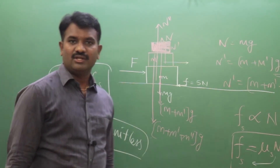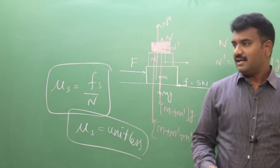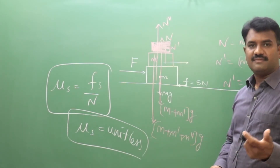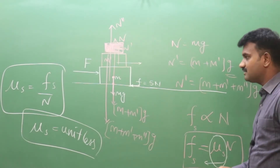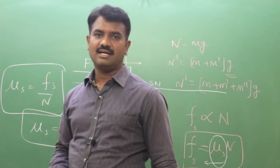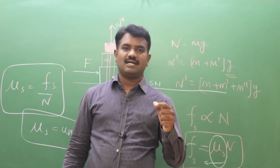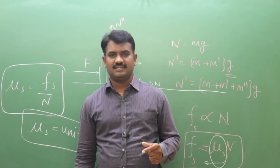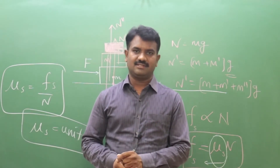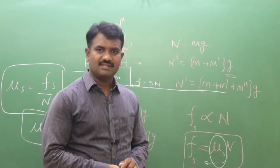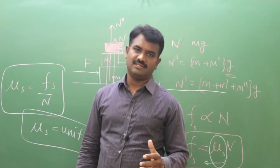If the normal reaction is doubled, the coefficient of static friction mu-s does not change. Mu-s is taken as a proportionality constant — even if the normal reaction is doubled, halved, or multiplied by 100, the coefficient of friction remains the same. It represents the property of the nature of the two contact surfaces, and does not depend on any other factor. It is constant for a particular pair of surfaces.